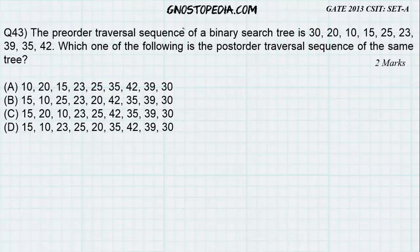The pre-order traversal sequence of a binary search tree is given as follows. Which one of the following is the post-order traversal sequence of the same tree? To solve this sum, you need to know the method for construction of a binary search tree from its pre-order traversal sequence.